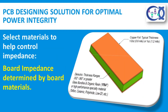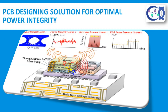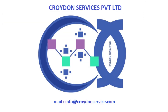Select materials to help control impedance. One of the major decisions that impact your power integrity is board impedance, which is determined by your choice of materials. By following the tips listed above, you will be able to optimize the power integrity for your design. Thanking you.